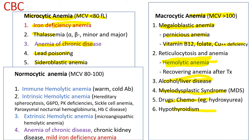Normocytic anemia includes most hemolytic anemia and anemia of chronic kidney disease. But the mild form of anemia of chronic disease and anemia from iron deficiency can be normocytic as well.